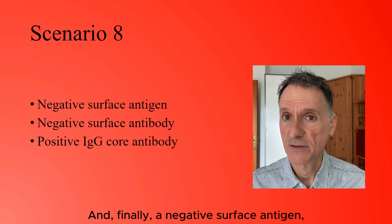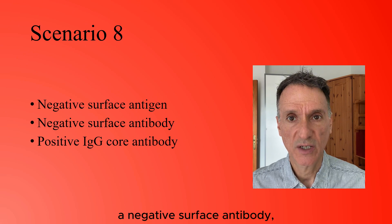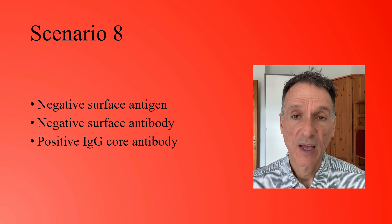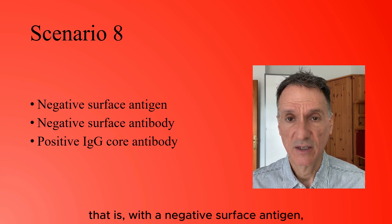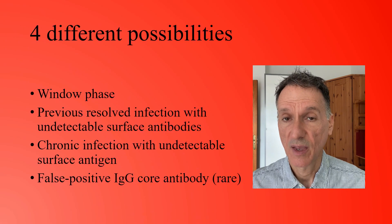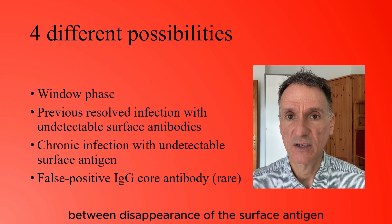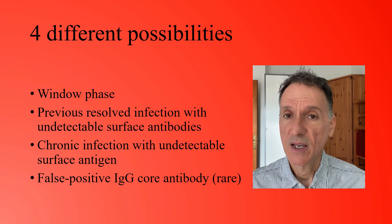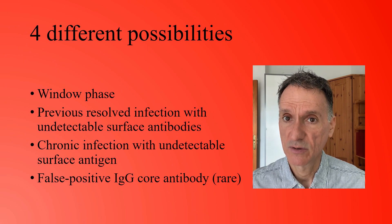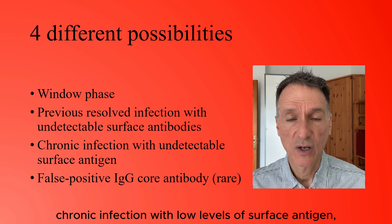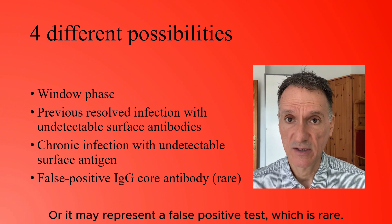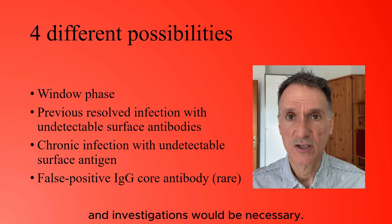Finally, a negative surface antigen, negative surface antibody, and positive IgG core antibody is probably the trickiest scenario. An isolated positive IgG core antibody with a negative surface antigen and negative surface antibody has four possible causes: it may be the window phase between disappearance of the surface antigen and the appearance of surface antibodies; it may represent a remote resolved infection with a decline of surface antibodies to undetectable levels; it could indicate ongoing chronic infection with low levels of undetectable surface antigen; or it may represent a false positive test, which is rare. Further classification and investigations would be necessary.